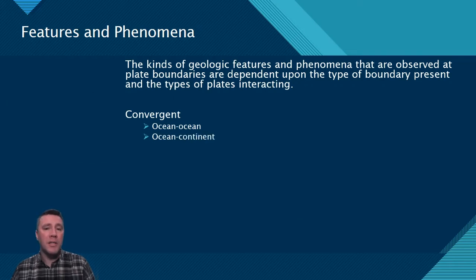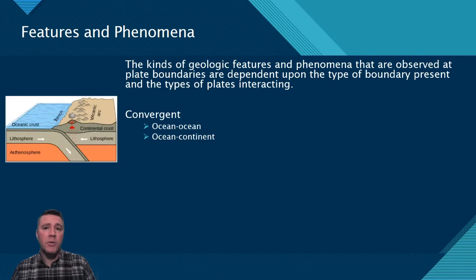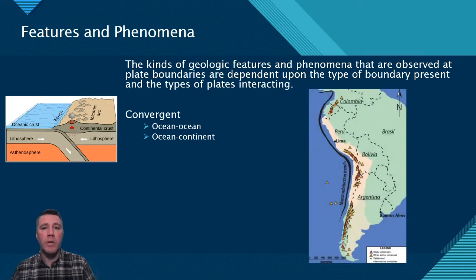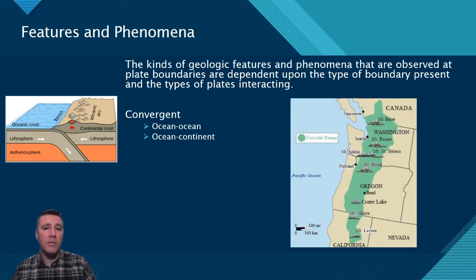At an ocean-continent convergent boundary, because the continental crust is much less dense than the oceanic crust, it ends up riding on top of the oceanic crust that is being subducted beneath it. As the subducting oceanic crust warms and melts, the molten rock begins rising towards the Earth's surface, producing chains of volcanic mountain ranges on land. The Andes Mountains, the longest mountain chain in South America, is a great example, as well as the Cascade Range in the Pacific Northwest, stretching as far north as Canada and as far south as Mount Lassen in California.